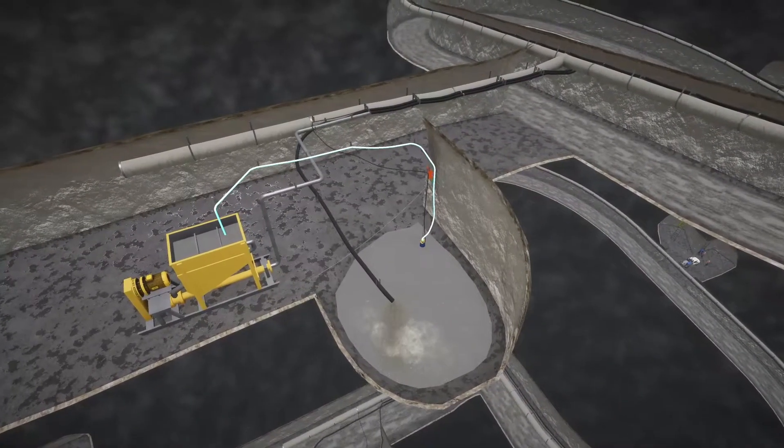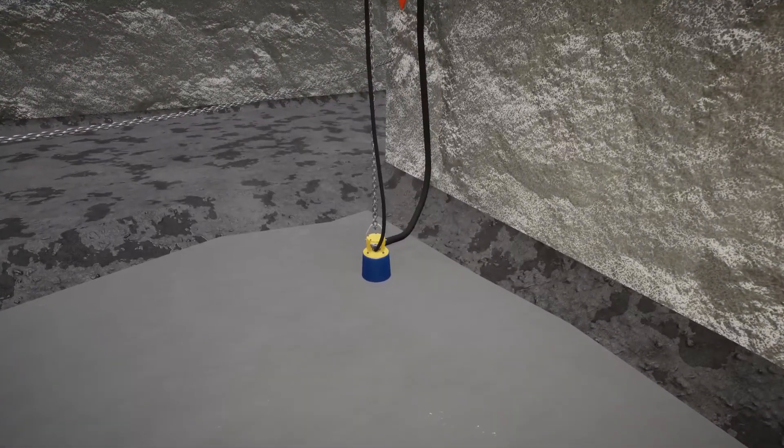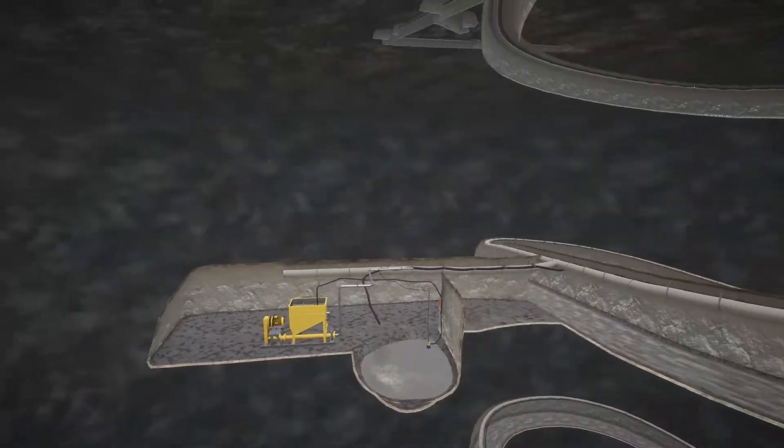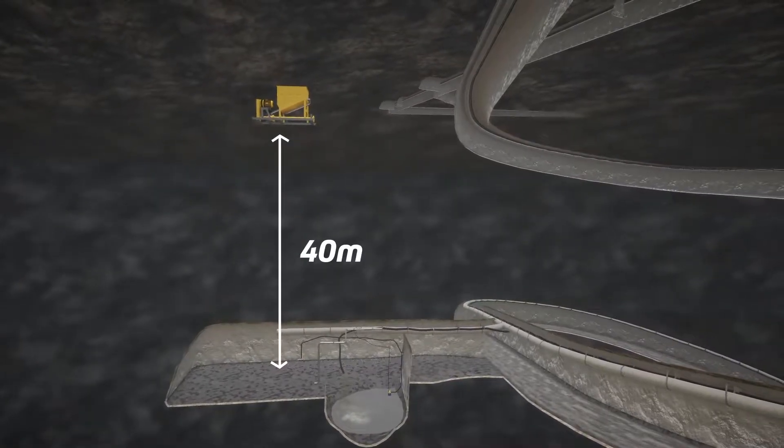A traditional 8 kilowatt submersible pump is designed to operate efficiently at 40 meters of total dynamic head. In this application, this means the helical rotor pump should be positioned here.